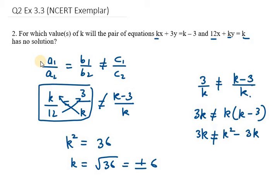From this equation we get 0 is not equal to k squared minus 3k minus 3k. So minus 3k minus 3k will give us minus 6k.